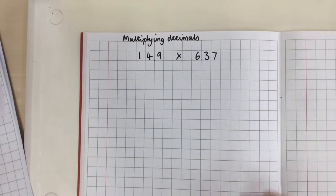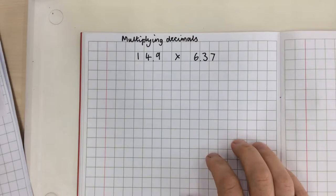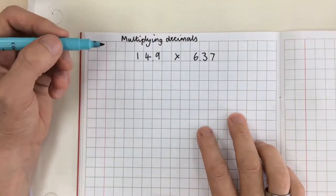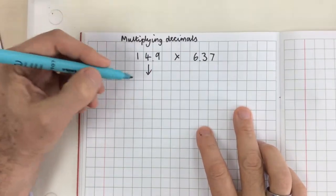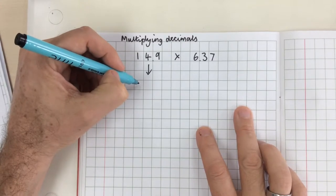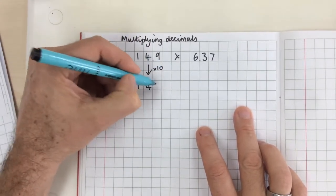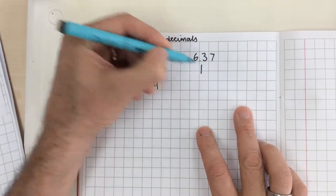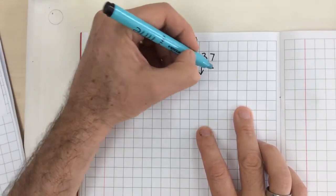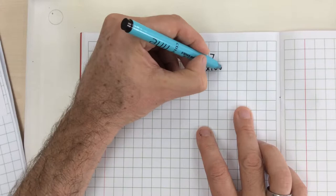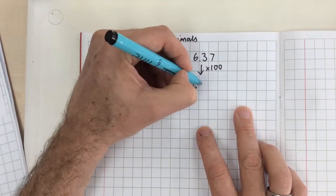In this video I'm going to multiply two decimals together. First of all I'm going to adjust them so that they're easier to deal with. So I'm going to multiply this number by 10 to make it 149 and I'm going to multiply this number by 100 to make it 637.